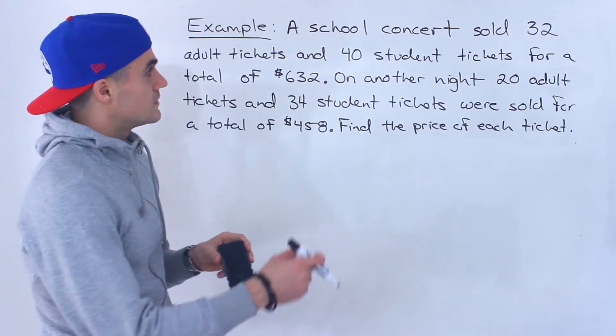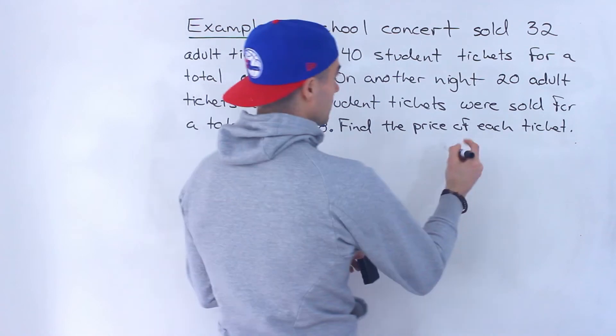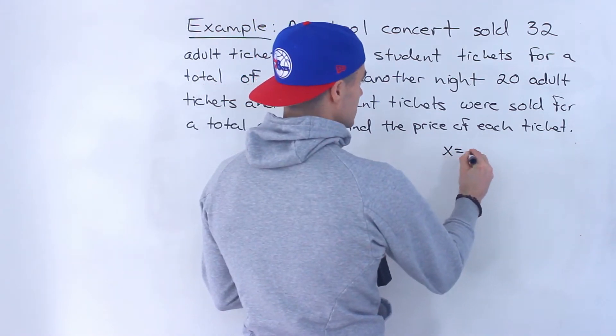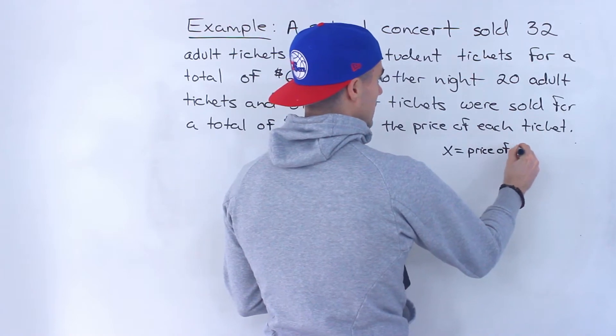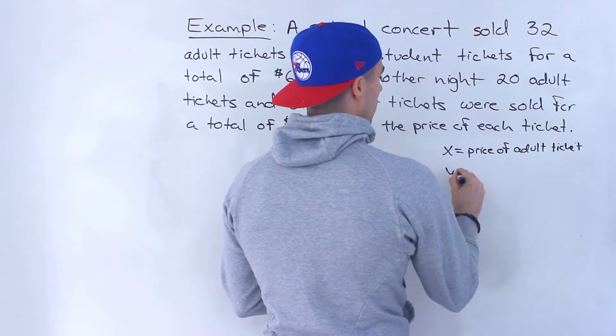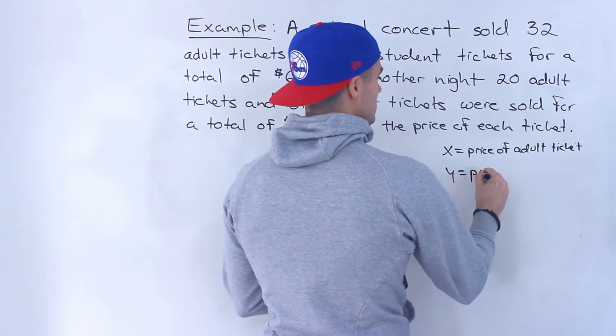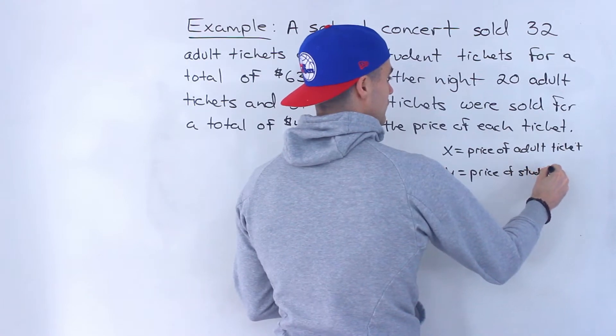Notice that we have enough information here to create two equations. So I'm going to introduce two variables. X is going to be the price of the adult ticket, and then Y would be the price of the student ticket. So that's what we're going to be finding.